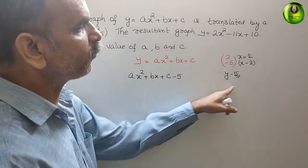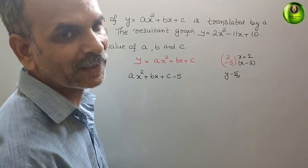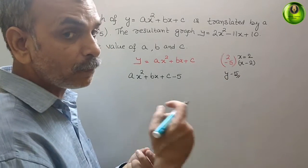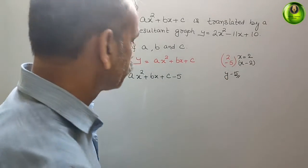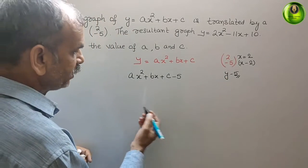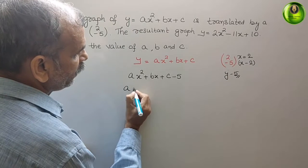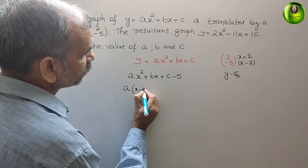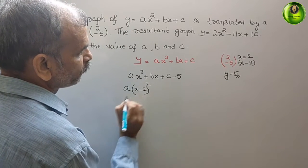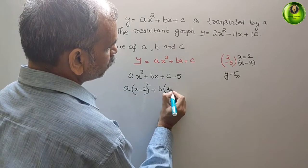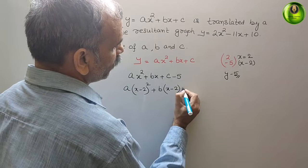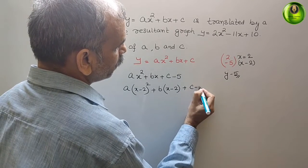Next, we will go for our factor x minus 2. In place of x, we will write x minus 2. So here, what it will be? See that: a(x minus 2)² plus b(x minus 2) plus c minus 5.